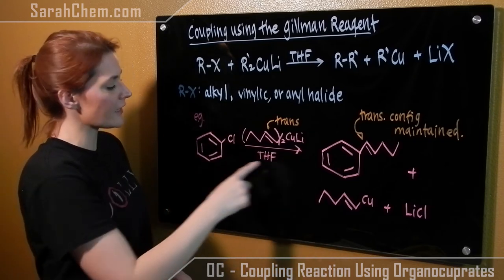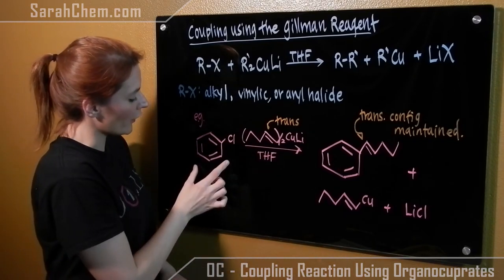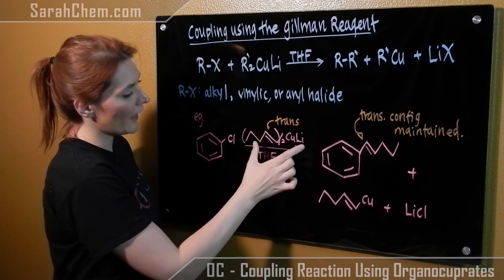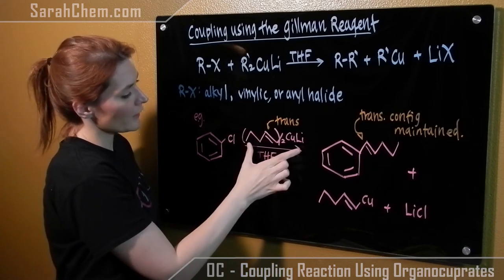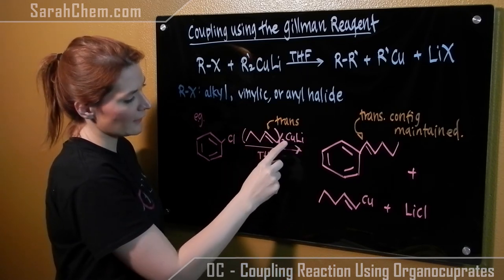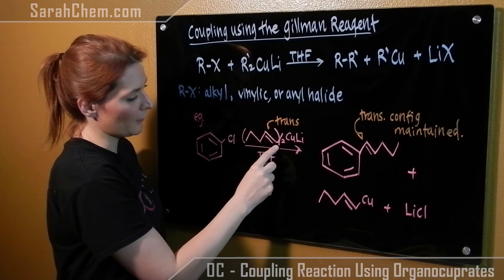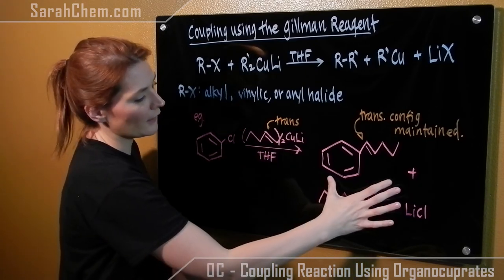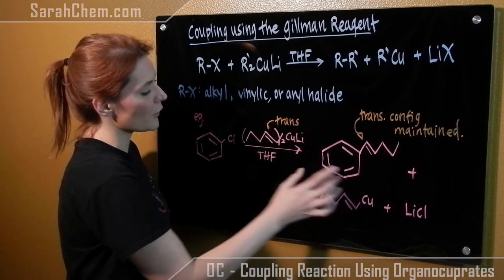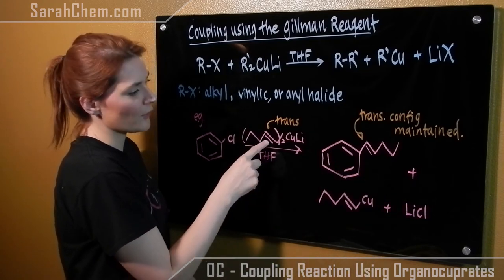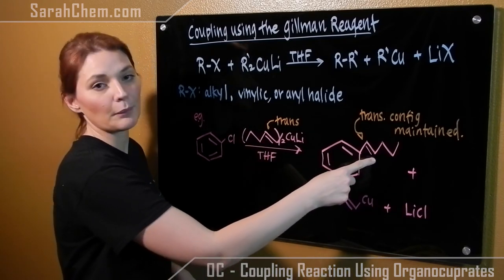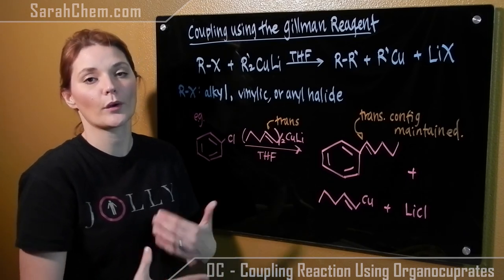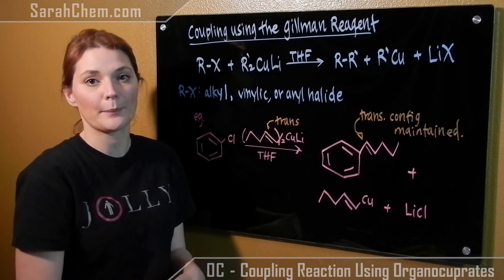In this example, we have a chloride group attached to a benzene ring reacting with the Gilman reagent. The carbon directly attached to the copper comes in and replaces the chlorine group, giving us the coupled product. An important thing to notice is that the starting material has a trans configuration, and so does the product — stereochemistry is maintained when doing an organocuprate coupling reaction.